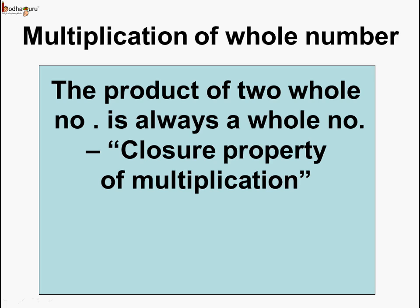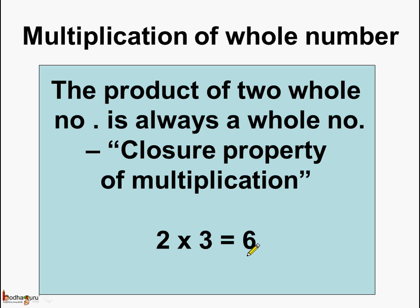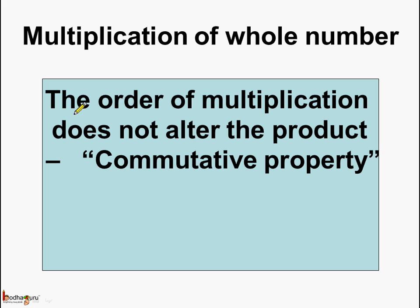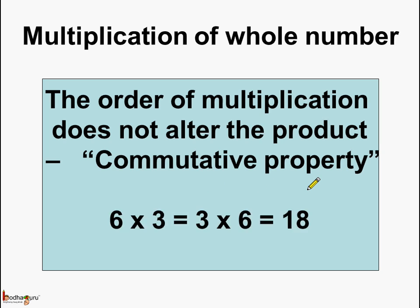So now we know the 3 properties related to multiplication of whole numbers. First, the product of 2 whole numbers is always a whole number — this is closure property of multiplication. For example, 2 multiplied by 3 is equal to 6, and 6 is a whole number. Second, the order of multiplication does not alter the product — this is called commutative property of multiplication. For example, 6 multiplied by 3 equals 3 multiplied by 6, which equals 18.